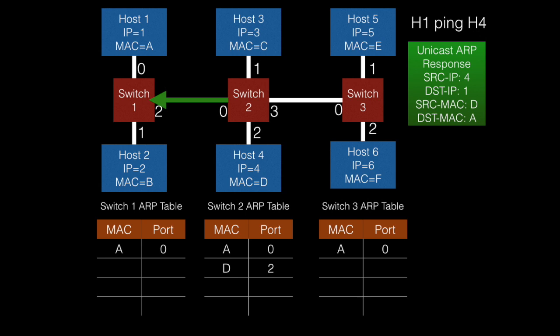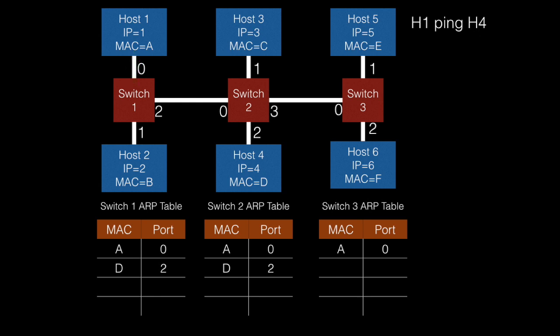Therefore, the only device that will receive this packet out of switch2 is going to be switch1. Switch1 will do the same thing that switch2 did, adding MAC ID D into its ARP table and realizing that the destination address of A is already known, forwarding the data out port 0. Therefore, on the return trip, this packet will only transit through switch2 and switch1 and will not go to any other hosts.